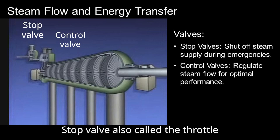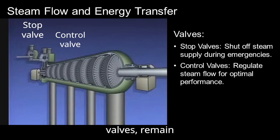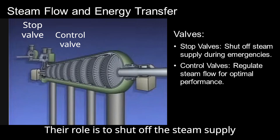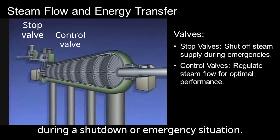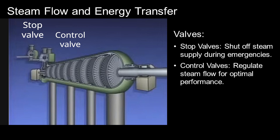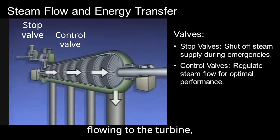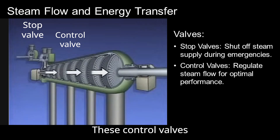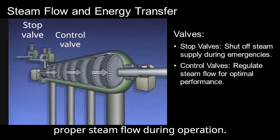Stop valves, also called throttle valves, remain fully open during normal operation. Their role is to shut off the steam supply during a shutdown or emergency situation. Control valves regulate the amount of steam flowing to the turbine, adjusting for optimal performance. These control valves help maintain proper steam flow during operation.